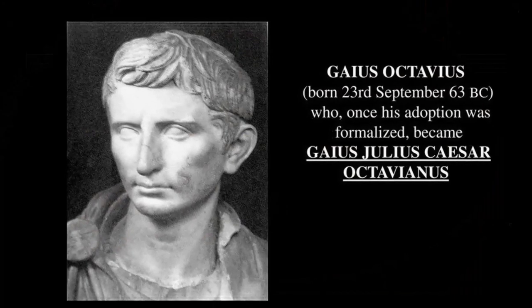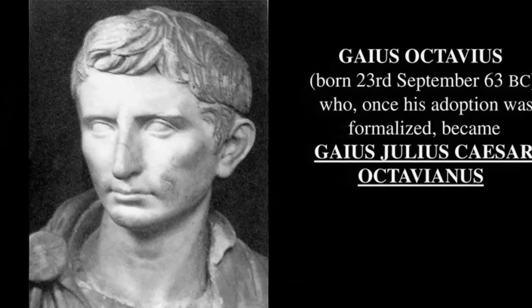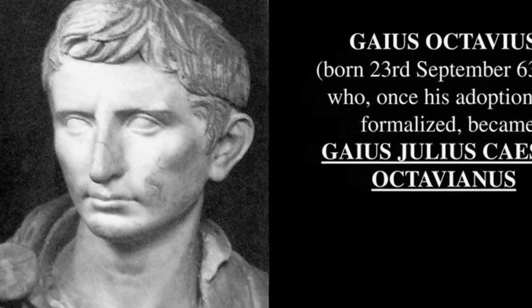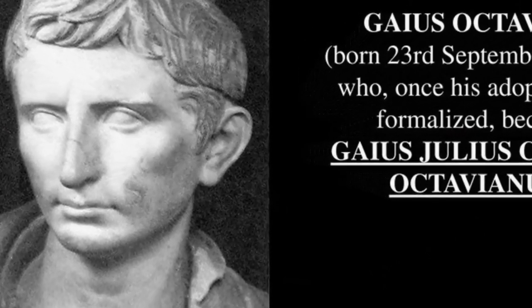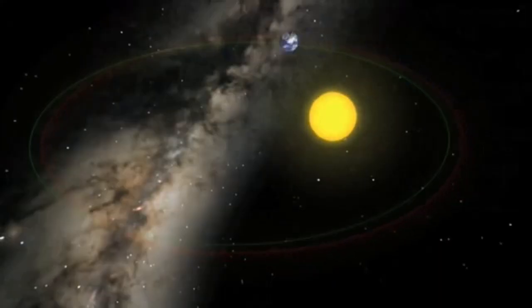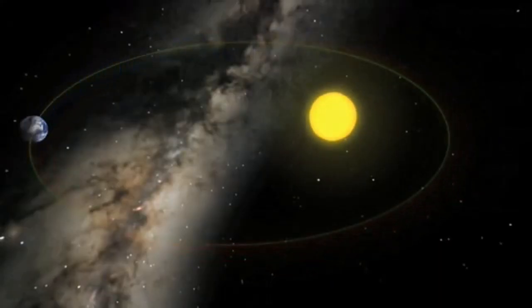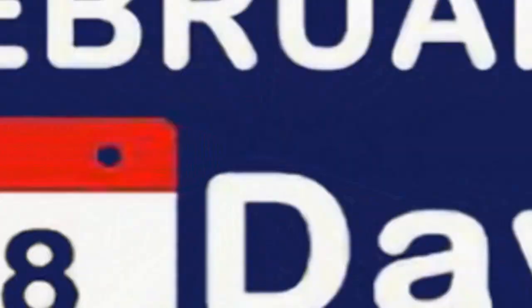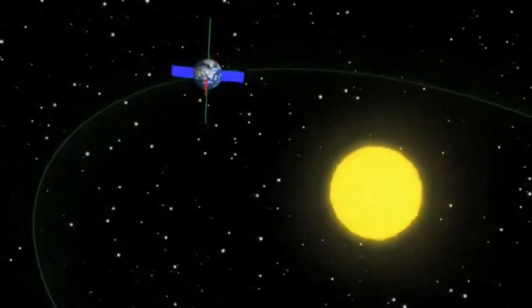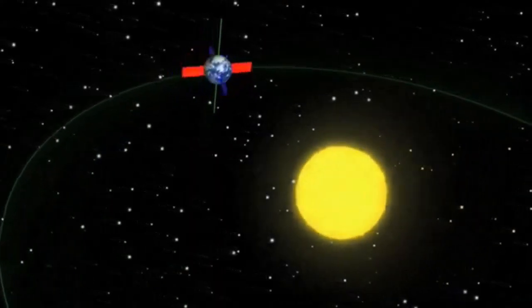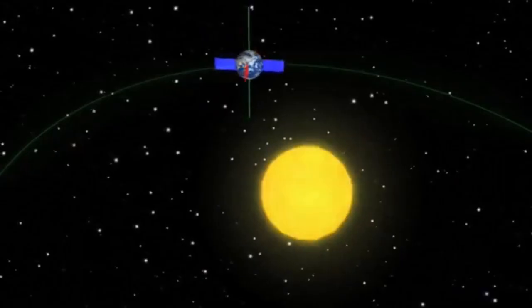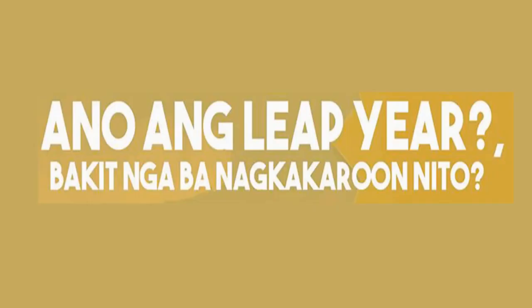At nang si Octavius Caesar, na mas kilala bilang Augustus, nang siya naman ang bumawi ng kapangyarihan, pinangalanan niya rin ang buwan ng Agosto galing sa kanyang pangalan. At dahil hindi niya gusto na malamangan, binawasan din niya ng isang araw ang Pebrero at binigyan ng tatlong putsyam na araw ang buwan ng Agosto. At ito ang dahilan kaya naglalaman lang ng 28 na araw ang buwang ito.